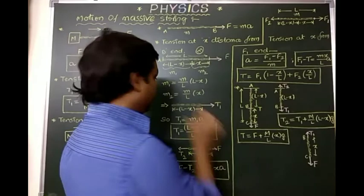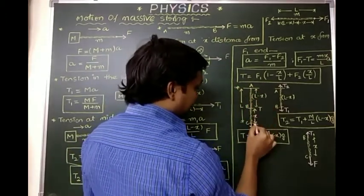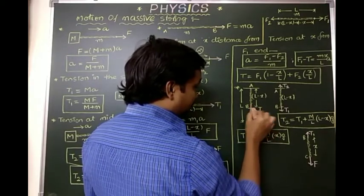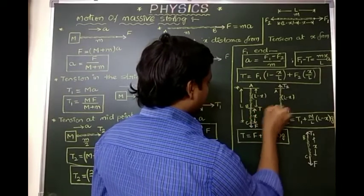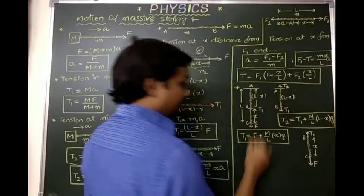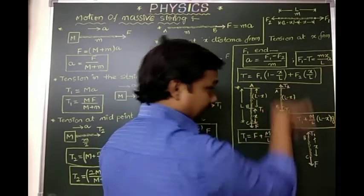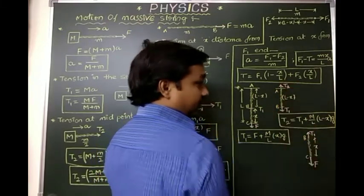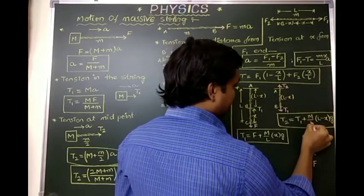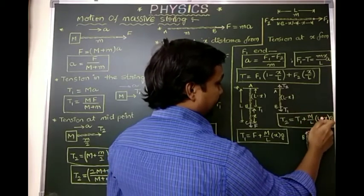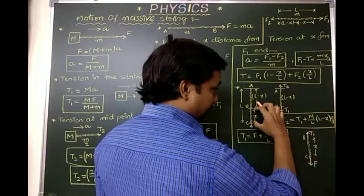Now, if the string is suspended vertically from the roof — the same setup but vertical — with force F applied at the lower end. At a point that is x from the lower end, T1 is the tension at that point and T2 is the tension at the roof. For the upper (l minus x) portion: T2 equals T1 plus (m/l)(l minus x) times g, since gravity acts on that segment.